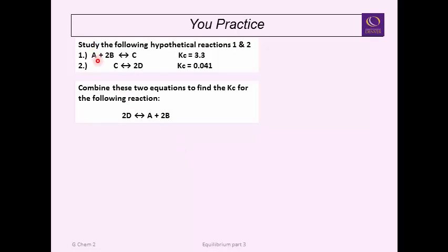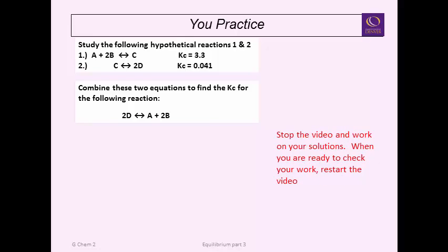Here's another practice problem with two hypothetical reactions: (1) A + 2B → C with KC = given, and (2) C → 2D with KC = given. Can you combine these to get the equation 2D → A + 2B, and find the resulting KC? Stop the video, try to rearrange and stack the two equations to solve for the target expression, then restart to check your answer.